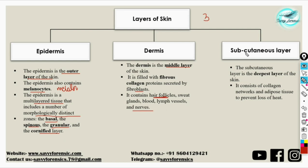The third or innermost layer, the deepest layer of the skin, is the subcutaneous layer, which consists of collagen networks and adipose tissue. Adipose is the tissue consisting of fat and it is responsible for preventing loss of heat from the body.